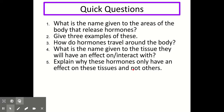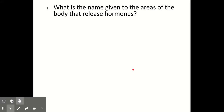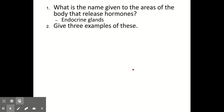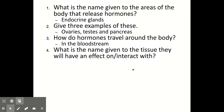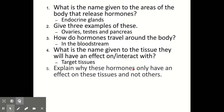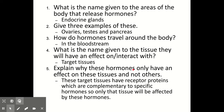Let's try some quick questions on what we've covered so far. Question one: what is the name given to the areas of the body that release hormones? These are called endocrine glands. Question two: give three examples. At National 5 the three examples you need to know are the ovaries, testes and pancreas. Question three: how do hormones travel around the body? The answer is in the bloodstream. Question four: what is the name given to the tissue they will have an effect on? That would be the target tissues. And explain why hormones only have an effect on these tissues: those target tissues have receptor proteins which are complementary to the specific hormones, so only that tissue will be affected.